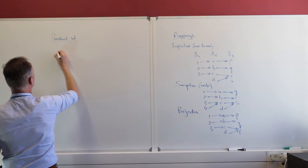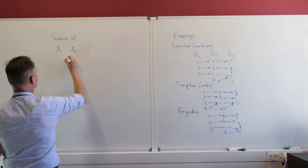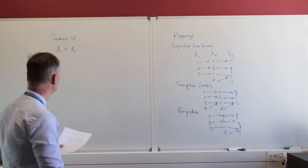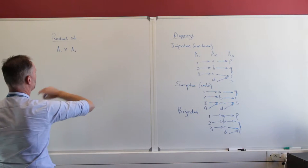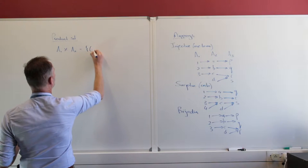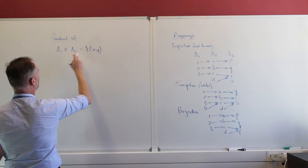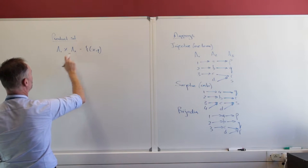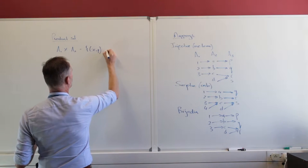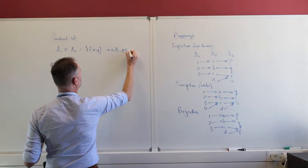Imagine that I have two sets, A sub 1 and A sub 2. If I take the product set, I put that multiplication sign there, but don't be too concerned about that. We're not really talking about multiplication, because what we're going to do is create pairs (x, y) where x belongs to A sub 1 and y belongs to A sub 2, because A sub 1 was first and A sub 2 was second.